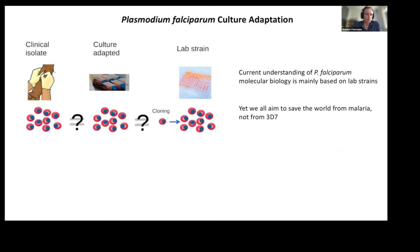Let me start with some definitions. A clinical isolate is a parasite taken straight from the arm of a malaria patient — this is as close to the real world as you can get. If you put this isolate into a culture flask for weeks or months, it will be called culture-adapted. If you were to select an individual parasite from that population to make a clone, you then generate a lab strain.